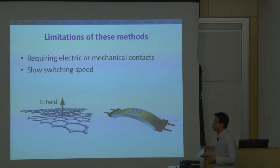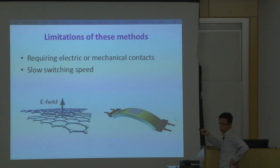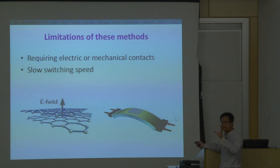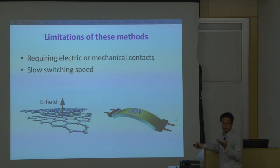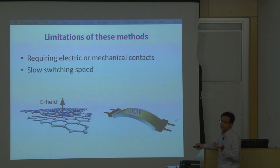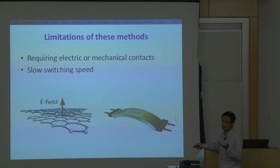These are two examples of tuning the band gap, but there are some limitations. First, you need electrical or mechanical contact — you have to physically touch the sample in order to change it. And because you have to physically touch it, the switching speed is usually slow. For the mechanical method, it takes at least a few seconds to bend. For the electrical method, you need nanosecond time scales to change it, which is relatively slow.